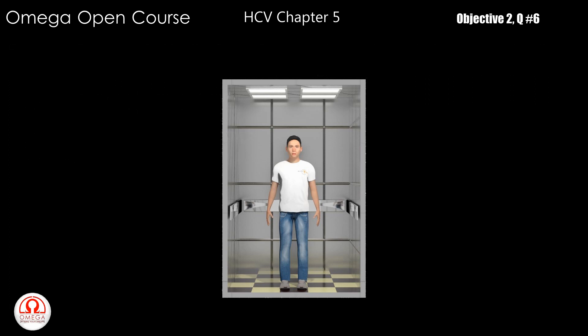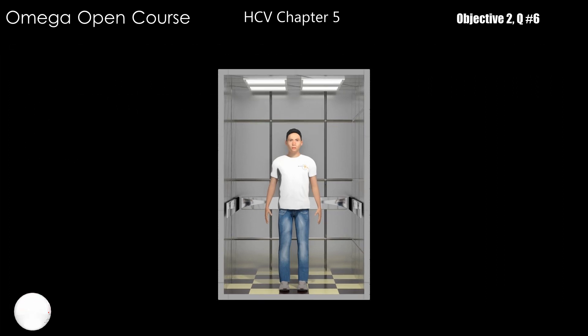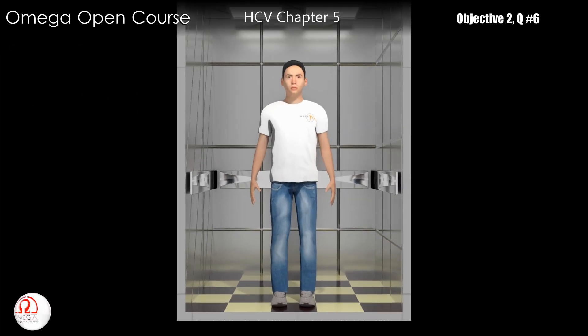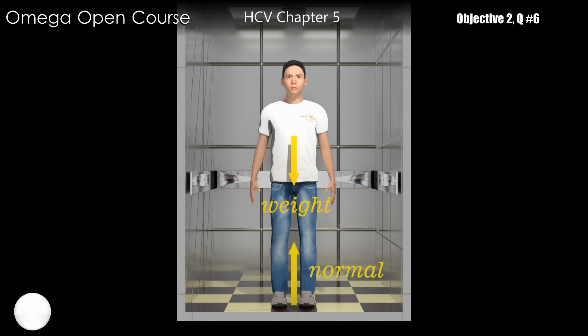Let's first make the free body diagram of the person. Gravitational force equal to the weight of the person acts in the vertically downward direction. A normal reaction from the floor acts on him in the upward direction. As per the question, the normal reaction is more than the weight.